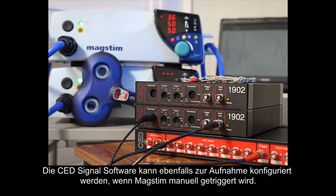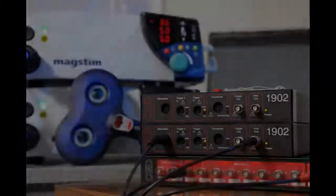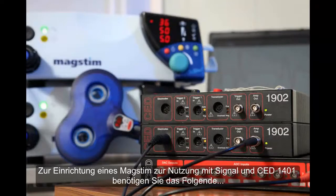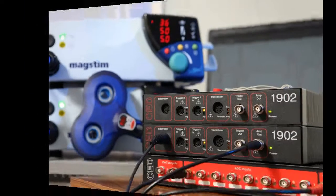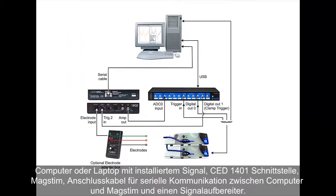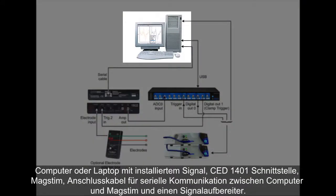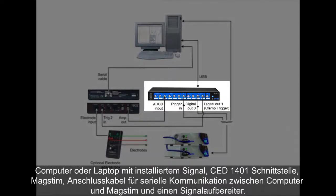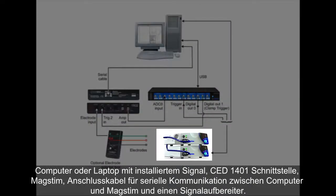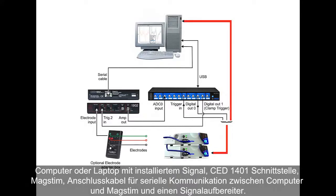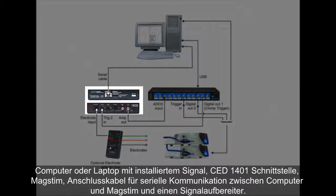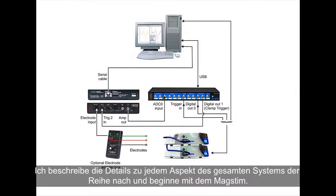CED signal software can also be configured to record when the MagStim is triggered manually. To set up a MagStim for use with signal and a CED1401, you will need a computer or laptop with signal installed, a CED1401 interface, a MagStim, a connecting cable for serial line communication between the computer and the MagStim, and a signal conditioner. I will describe details of each aspect of the whole system in turn, starting with the MagStim.